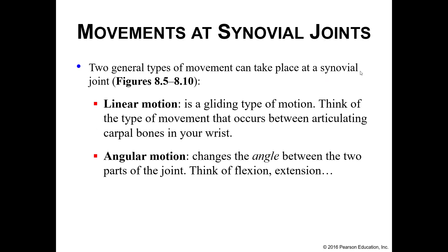In this recording we'll discuss the movements associated with synovial joints. We have two basic types of movements: linear motions and angular motions. Linear motions — think about what happens with your wrist bones or carpal bones; they glide back and forth with each other. Angular motions are the ones we're going to focus on, as these change the angle between the two parts of the bones.